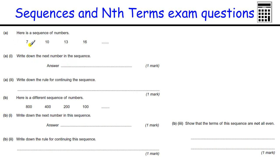With all sequences, we really should start by looking at what's happening between each term. So here we've got each time we go up one, we're adding three. So the next number is going to be nineteen. Write down the rule for continuing sequences. The rule for continuing is just what you're doing each time, so nothing more complicated than add three each time.